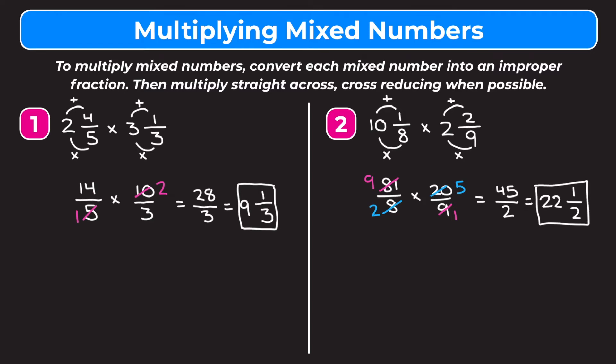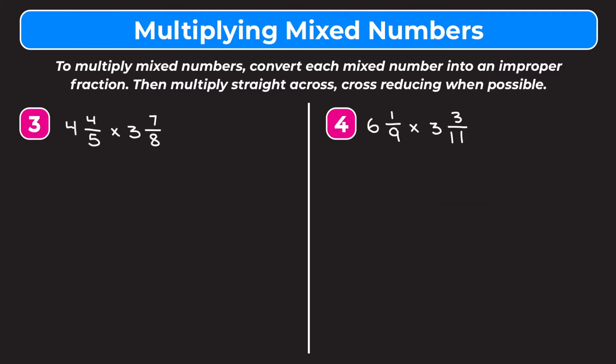Let's take a look at two more examples. I encourage you to pause the video and try them on your own, then watch me work through the problems to check your answers. Example 3 is 4 and 4 fifths times 3 and 7 eighths. We're going to start by changing each mixed number into an improper fraction. For the first one we do 4 times 5 which is 20, add that to 4 to get 24 as our new numerator, and keep our denominator the same.